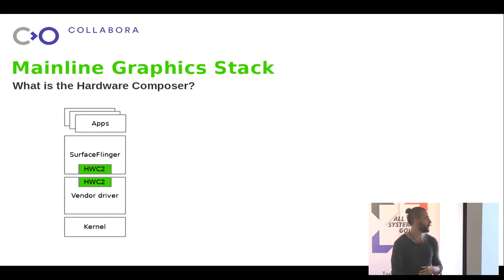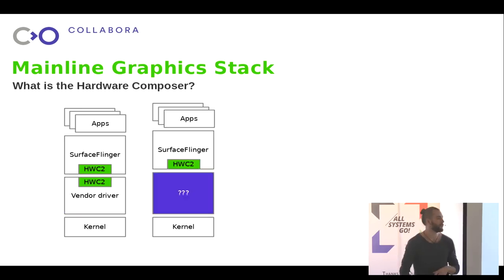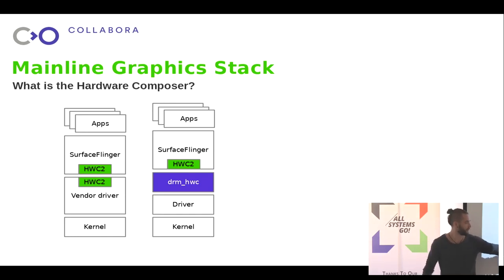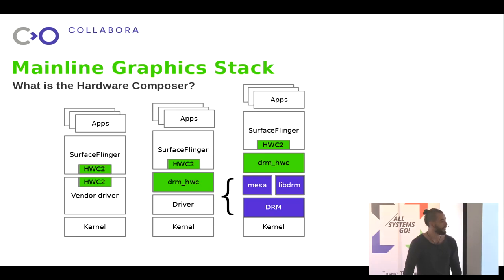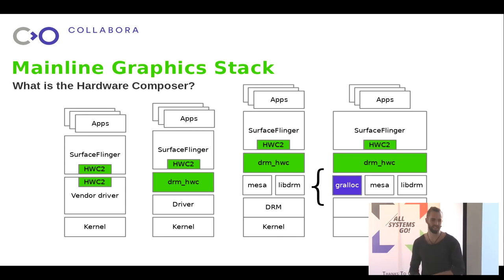This is where DRM Hardware Composer lives in the stack. The vendor blob is typically proprietary, but if we break it into open source components, we have the kernel, and the driver, which is actually a bunch of components - Mesa, libDRM, and some other things. On top of it we have DRM Hardware Composer. There is also GRALLOC, which is the graphics memory allocator. There is no single software project called GRALLOC - there are a bunch of implementations and it's a giant mess, especially when you want memory that different hardware components can all use together.